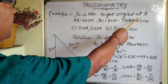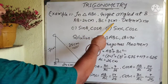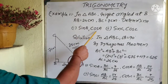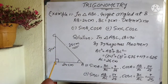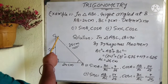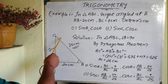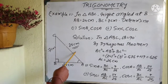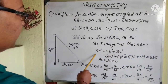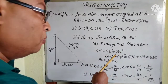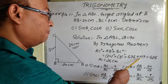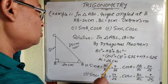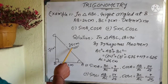Example: In triangle ABC right angled at B, AB equals 24 centimetres and BC equals 7 centimetres. We need to determine sine A, cos A, sine C, and cos C. First, draw the triangle — ABC right angled at B. AB is 24 cm, BC is 7 cm. By Pythagoras theorem, AC squared equals AB squared plus BC squared: 24 squared is 576, 7 squared is 49, giving 625. So AC equals 25 centimetres.